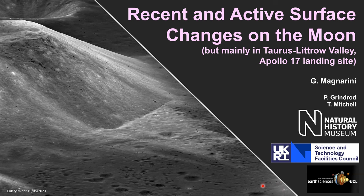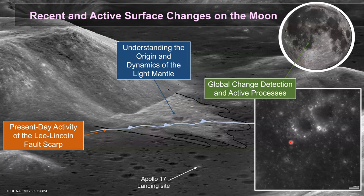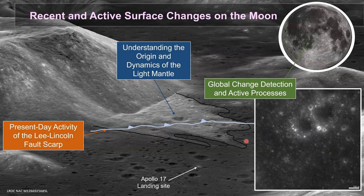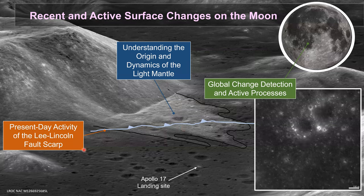One of the geological targets of the Apollo 17 mission was this five-kilometers-long landslide deposit — the bright, high-albedo unit here in the center of the slide, which is also cut by a thrust fault. Our project has a focus on the light mantle landslide and the thrust fault. We have three tasks: first, understanding the origin and dynamics of the light mantle; second, understanding the present-day activity of the thrust fault called the Lee-Lincoln scarp fault.